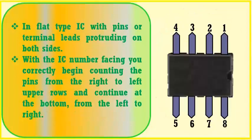In a flat type IC with pins or terminal leads protruding on both sides, with the IC number facing you correctly, begin counting the pins from right to left on the top row, and continue at the bottom from left to right.